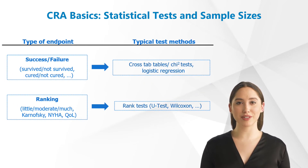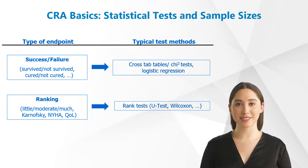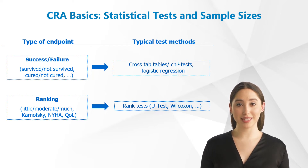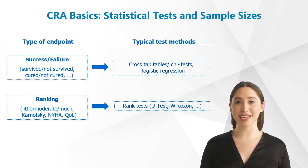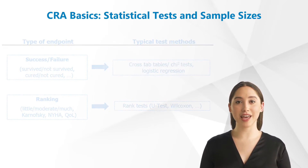Here you can see two further examples of types of endpoints. There is success/failure such as cured/not cured, survived and not survived, etc. This kind of differentiation is evaluated by means of cross-tab tables, chi-square tests, or logistic regression. If the ranking of parameters is demanded, such as for the expression of a characteristic or for the Karnofsky index in oncology, then U-tests or Wilcoxon rank tests will be applied.